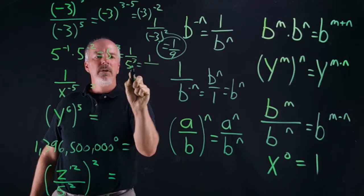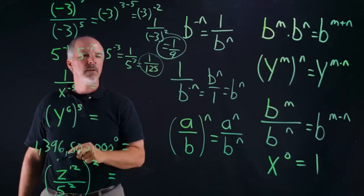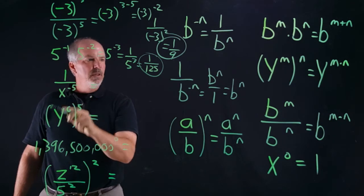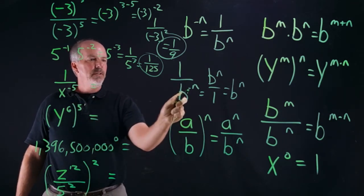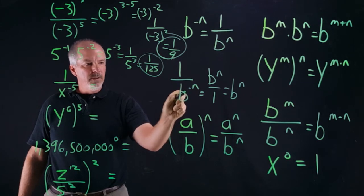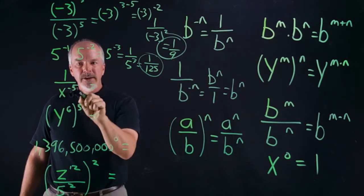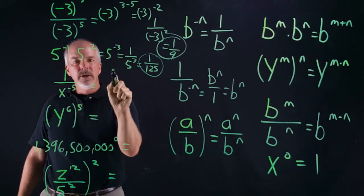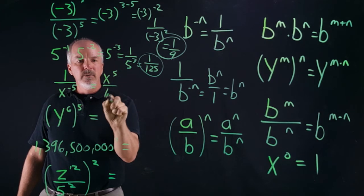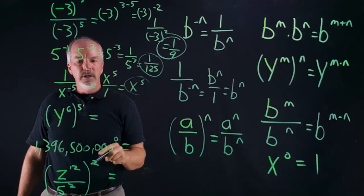One over x to the negative five — when dealing with negative exponents, we reciprocate, moving denominator to numerator or numerator to denominator. In this case it's in the denominator, so we move it to the numerator: this becomes x to the fifth over one, which is x to the fifth.